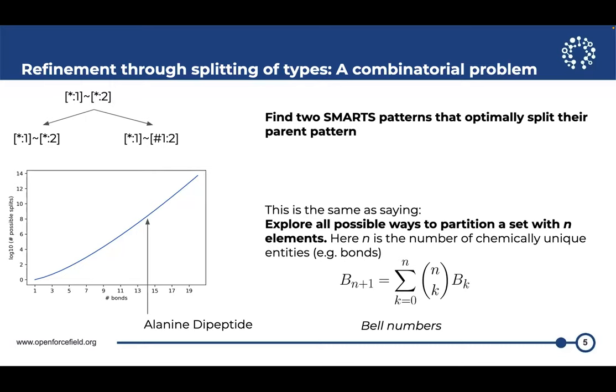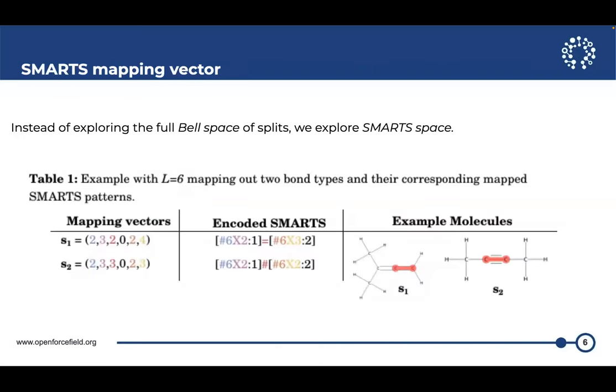And this basically tells us that the number of ways we can split types is really huge. If you think about something like alanine dipeptide, which has 14 bonds, we can essentially have 100 million different force fields that have two bond types. So the combinatorial space that is spanned by that is accessible for us is really huge. So we must come up with a smart way to explore the space.